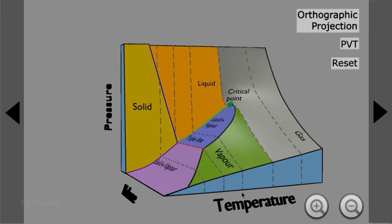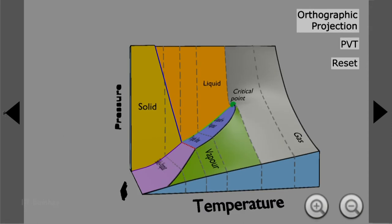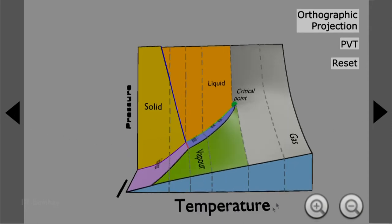Pressure, volume, temperature — normally referred to as the PVT diagram — in three axes. If I show in this direction, you can see that in a pressure-temperature axis one can read this phase diagram. What you can see from here is there are three phases: solid, liquid, and vapour. Between solid and liquid you have a phase transformation line. If you increase temperature you go from solid to liquid, and beyond that you can go from liquid to the gaseous region.